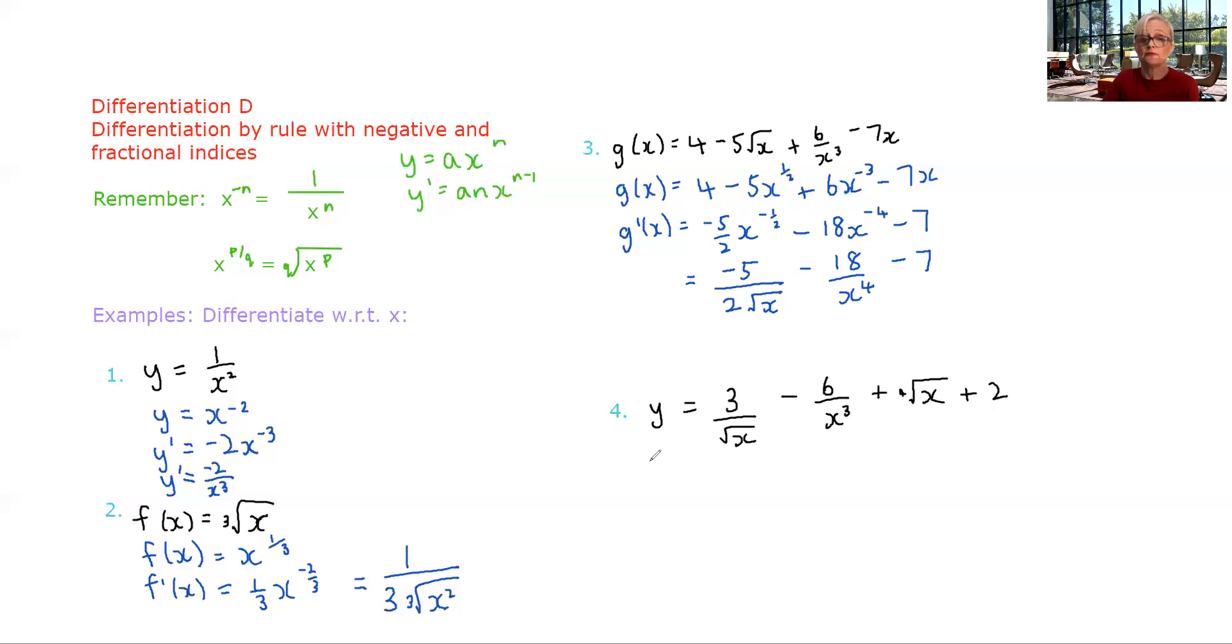So before we try to differentiate, we're going to try and put this into index notation. So this is an x to the half in the denominator. So this is actually three x to the negative one half. This is six x to the negative three. The fourth root of x is x to the one quarter. And this of course, two is just two. All right.